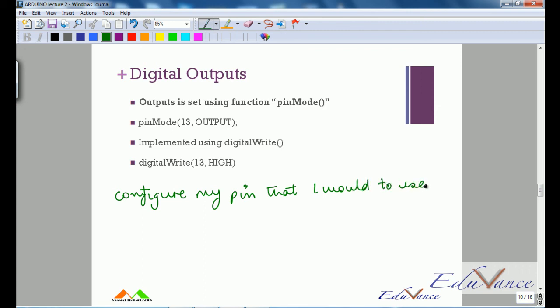Let's say, for example, I want to use pin number 13 and I would like to use it as an output. I would do that using the function pinMode, and this is how I would use it: pinMode, pin number 13, type OUTPUT. This is just the configuration. Where would I do this? I would do this in my setup function.